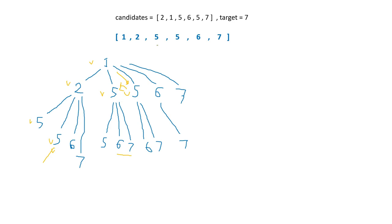Since we have already sorted the array, any duplicate numbers are grouped together. So if we have 5,5 in the array, we should only grow the tree for the first 5 and skip the second and any further duplicates at the same recursion level, because they will produce only repetitive combinations. The rule is: if the current element is the same as the previous element at the same level, skip it.